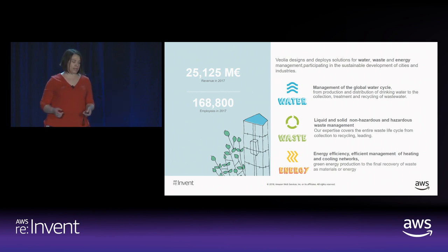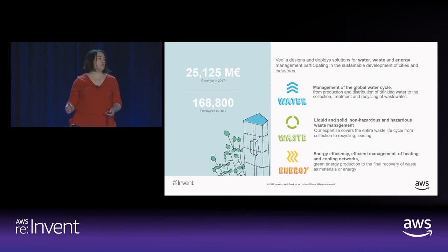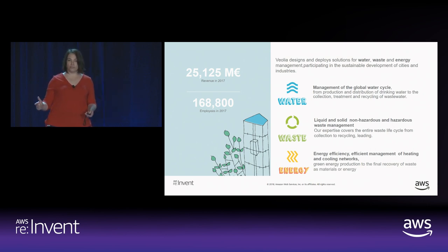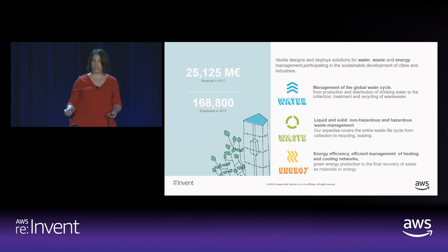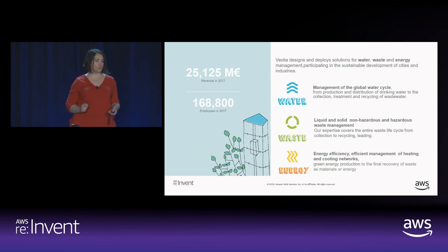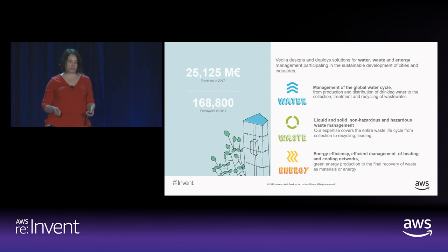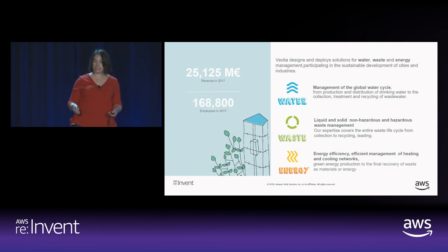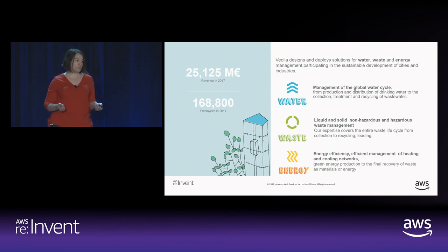A few words about the three domains that support our business. Water — today we provide drinking water to about 100 million users in the world. Waste — we treat almost 50 billion tons of waste yearly. And energy — we operate heating and cooling networks for 560 cities in the world. In IT as well, we focus on resourcing the world, and thanks to AWS and its infrastructure and services, we are able to reduce our carbon footprint. To support our business, a digital transformation was mandatory — and it's been happening every day, for several years, and it's everywhere: for the customers, the business, the employees, and of course for IT.